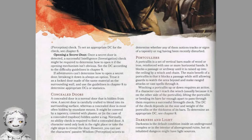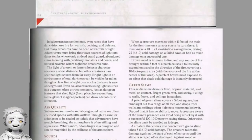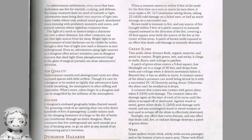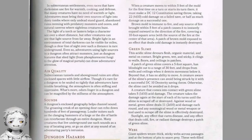Darkness and light: darkness is the default condition inside an underground complex or above-ground ruins interior. An inhabited dungeon might have light sources — even races with darkvision use fire for warmth, cooking and defence, but many creatures have no need of warmth or light. Adventurers must bring their own sources into dusty tombs, abandoned ruins teeming with predatory monsters and oozes, and natural caverns with sightless hunters. A torch or lantern helps over a short distance, but other creatures can see that light source from far away — bright light can be visible for miles in total darkness, even underground, and often attracts monsters.